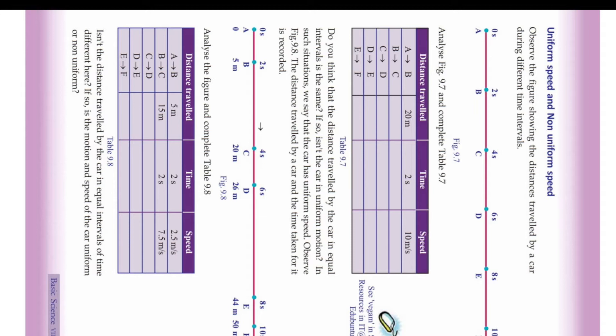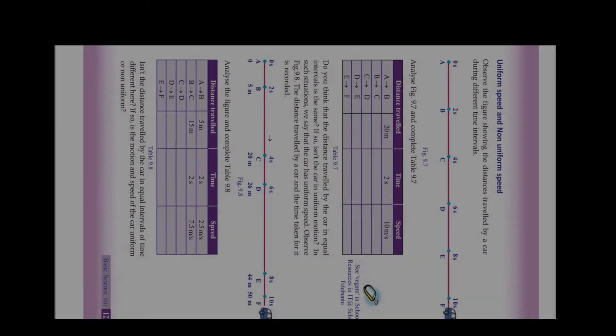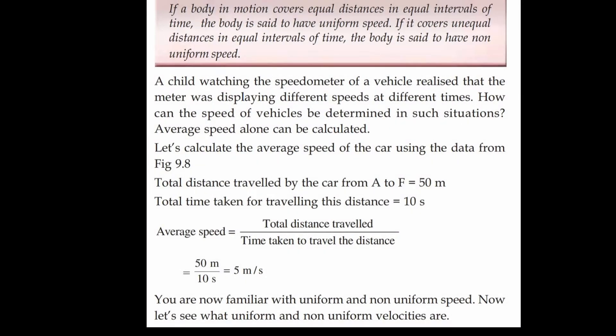Try to find out the speed between D and E and also E and F — you will get different values. Speed is changing because the time interval is equal but the distance travelled is different. This type of speed is called non-uniform speed — the distance travelled in equal intervals of time is different. In the first case, the distance travelled in each interval of time is the same, so that is uniform speed.